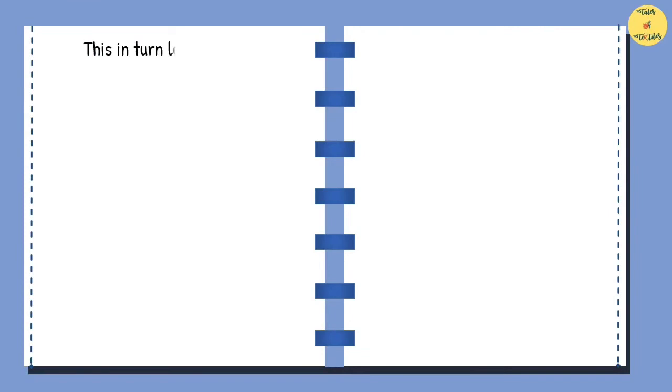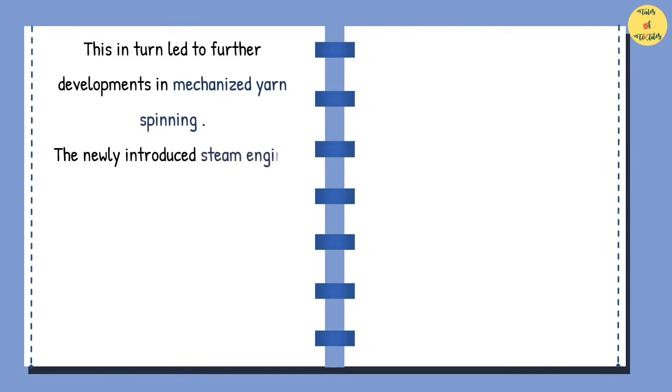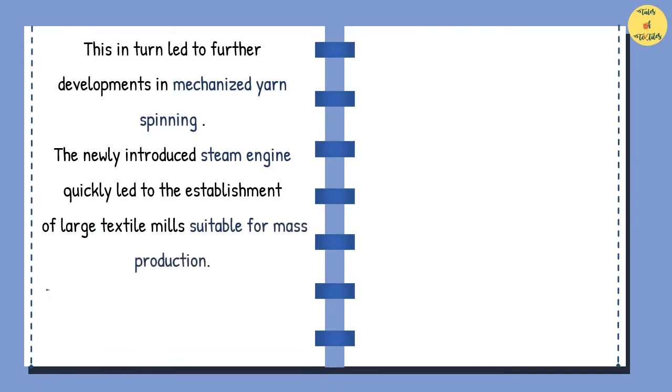This in turn led to further developments in mechanized yarn spinning. The newly introduced steam engine quickly led to the establishment of large textile mills suitable for mass production. This was the start of a new era, today known as industrialization.